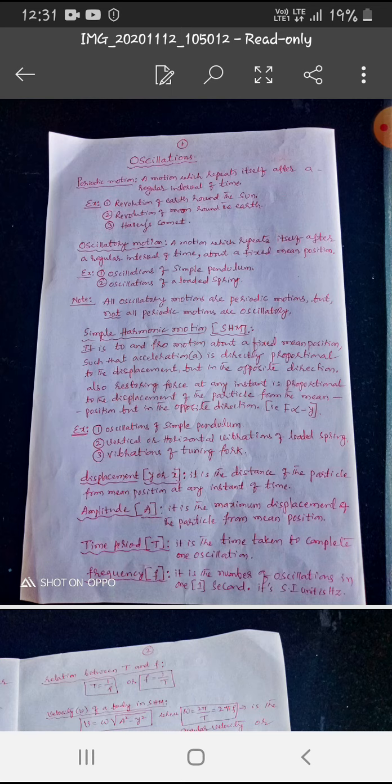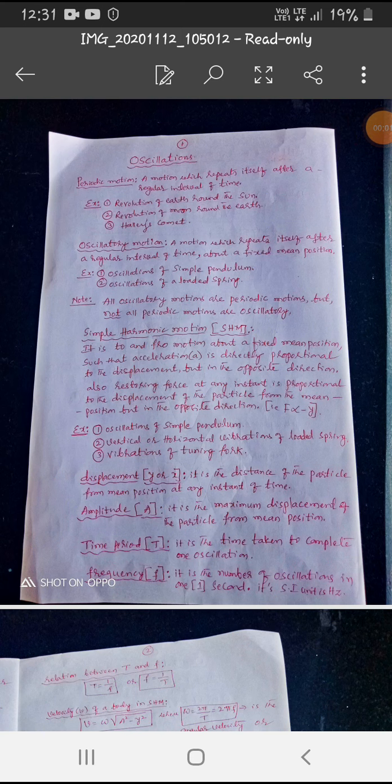A motion institutes itself after a regular interval of time, described as periodic motion. An oscillatory motion, a motion which repeats itself after a regular interval of time, about a fixed main position is called as oscillatory motion.